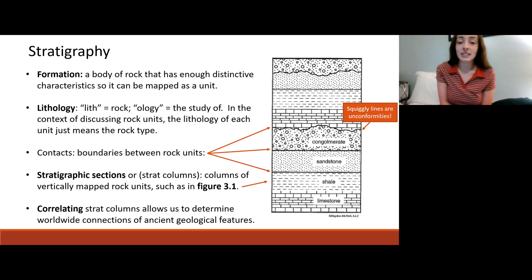The next term you need to know is stratigraphic section or strat sections or strat columns. They're basically a bunch of rock layers drawn out one on top of the other just as you see on any outcrop. The reason they are important for stratigraphy is so that we can map out different stratigraphic sections and correlate them. Correlating of strat columns allows us to determine worldwide connections of ancient geologic features.